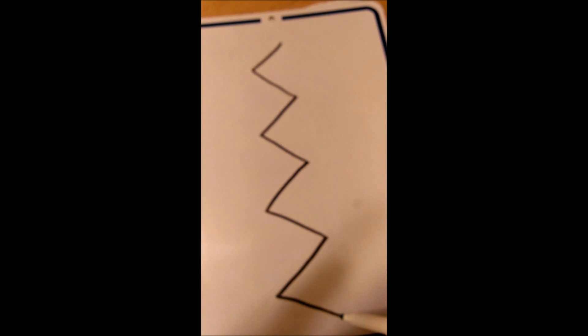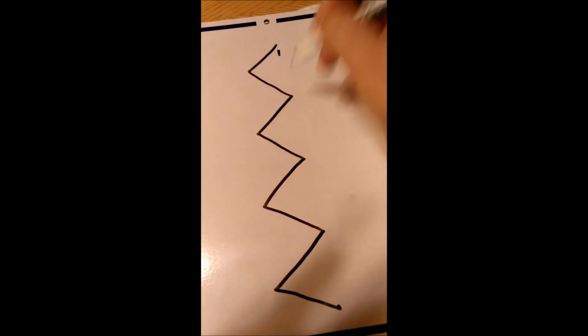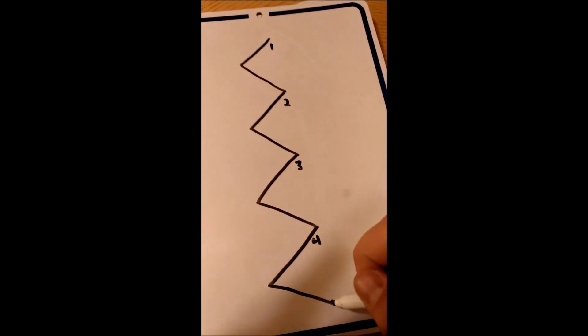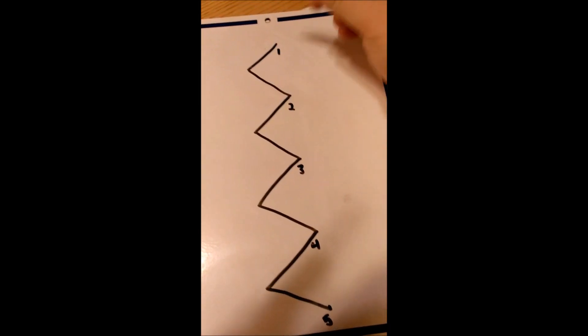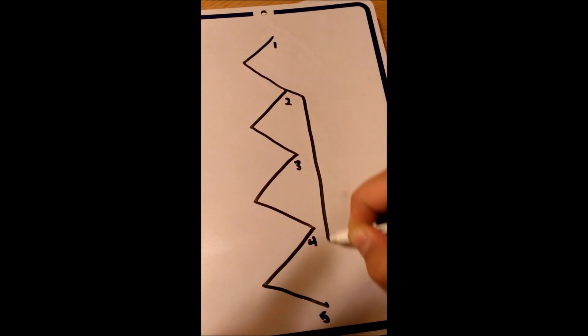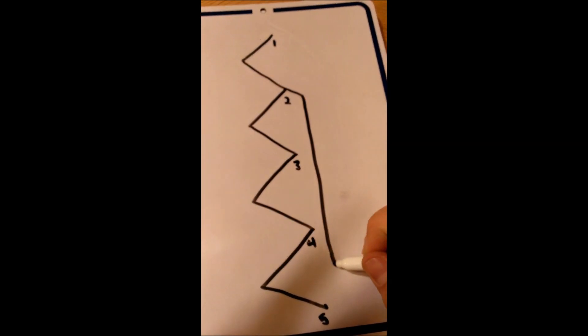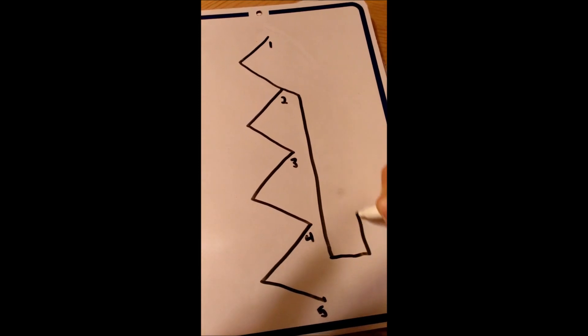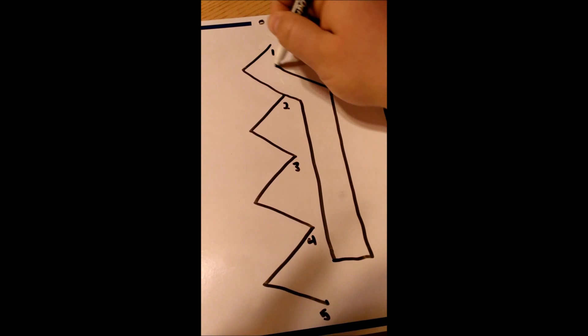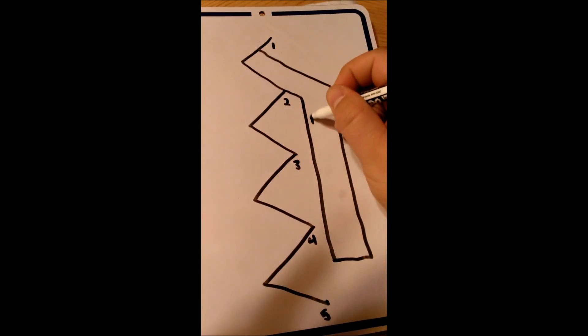So we start off by drawing a zigzag line with five individual points. We'll label it one, two, three, four, and five for the nerves extending out. Then we're going to go up here and start the inferior root of the ansa cervicalis. That'll come straight over, straight back up to form the superior root.